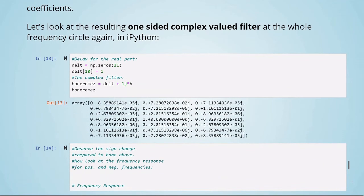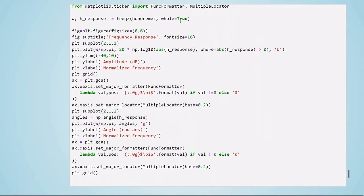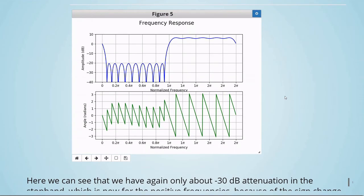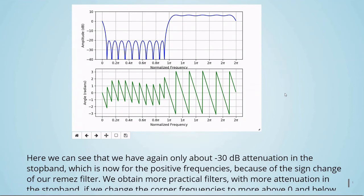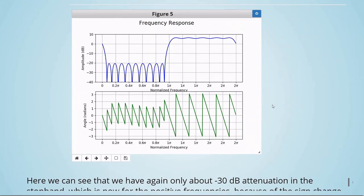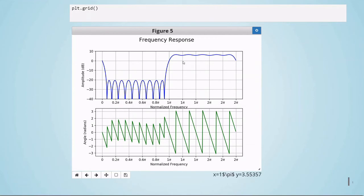We have our delay for the real part. The complex filter now is called H1_remez. And here, if we plot the frequency response, again setting whole equal to true, we see here that again, only about minus 30 dB attenuation in the stop band, which is now for the positive frequencies because of the sign change of our remez filter. We obtain a more practical filter with more attenuation in the stop band if we change the corner frequencies to more above 0 and below 0.5 in remez, increasing the transition bandwidth. Also, observe the equiripple behavior in the stop band, which is what we expect from remez.